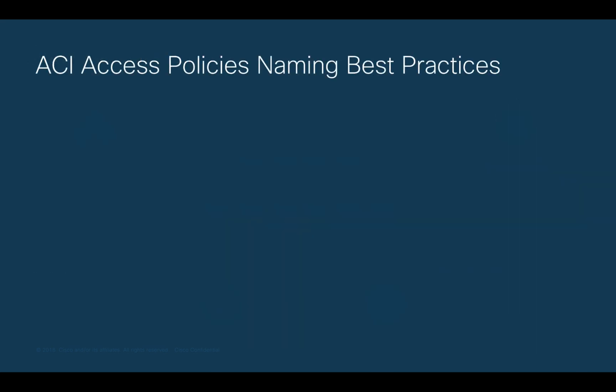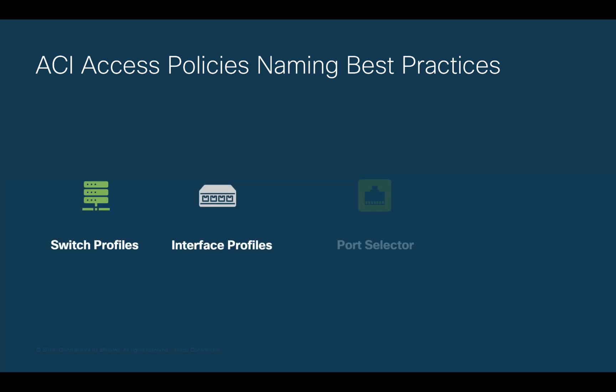As you learned, there are four main things that we create when configuring access policies and new connections: switch profiles, interface profiles, port selectors, and policy groups, which include policies. It is very easy to get your configurations messy if you create new profiles and objects every time you add a new connection, so I would like you to just create what you need.